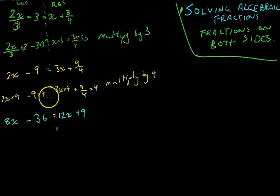Okay, so you can see lots and lots of work here. Once we've done that, though, this part should look really familiar to you. 8x minus 36 equals 12x plus 9. It's just a standard question now.